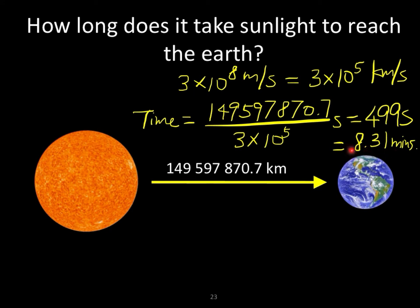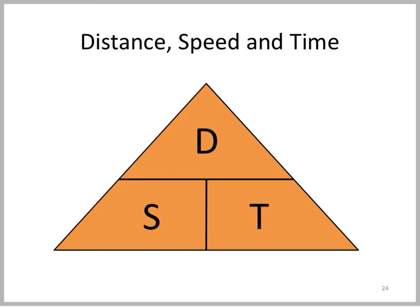Because this distance is actually quite large. Finally, this DST triangle is very useful in helping us remember the relationship between distance, speed, and time.